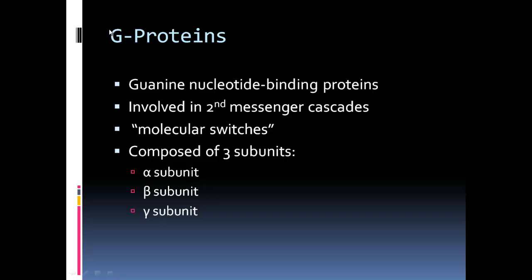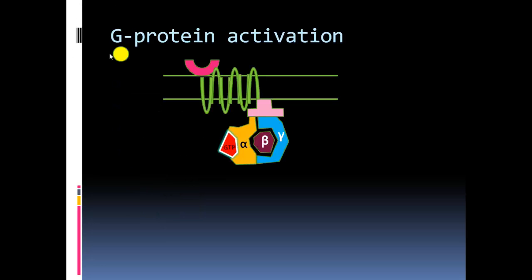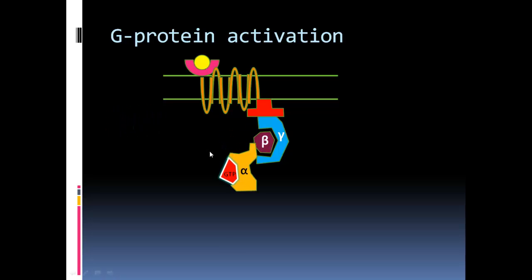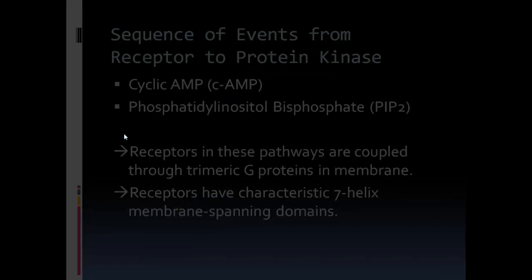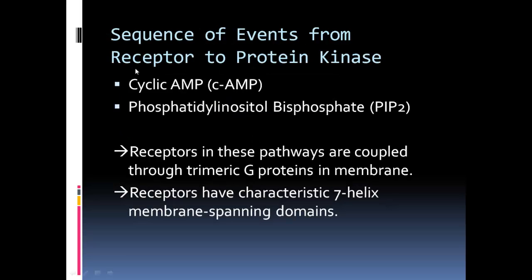G proteins stand for guanine nucleotide-binding proteins, which are involved in second messenger cascading systems and are considered molecular switches. They are composed of three subunits: alpha, beta, and gamma. In G protein activation, the G protein arrives and causes activation, the GDP is cleaved off, and the GDP-alpha subunit is taken out, inducing the intracellular transduction pathway — a sequence of events from receptor to protein kinase. Cyclic AMP and phosphatidylinositol bisphosphate pathways are coupled through trimeric G proteins in membranes, and receptors have characteristic seven-helix membrane-spanning domains.